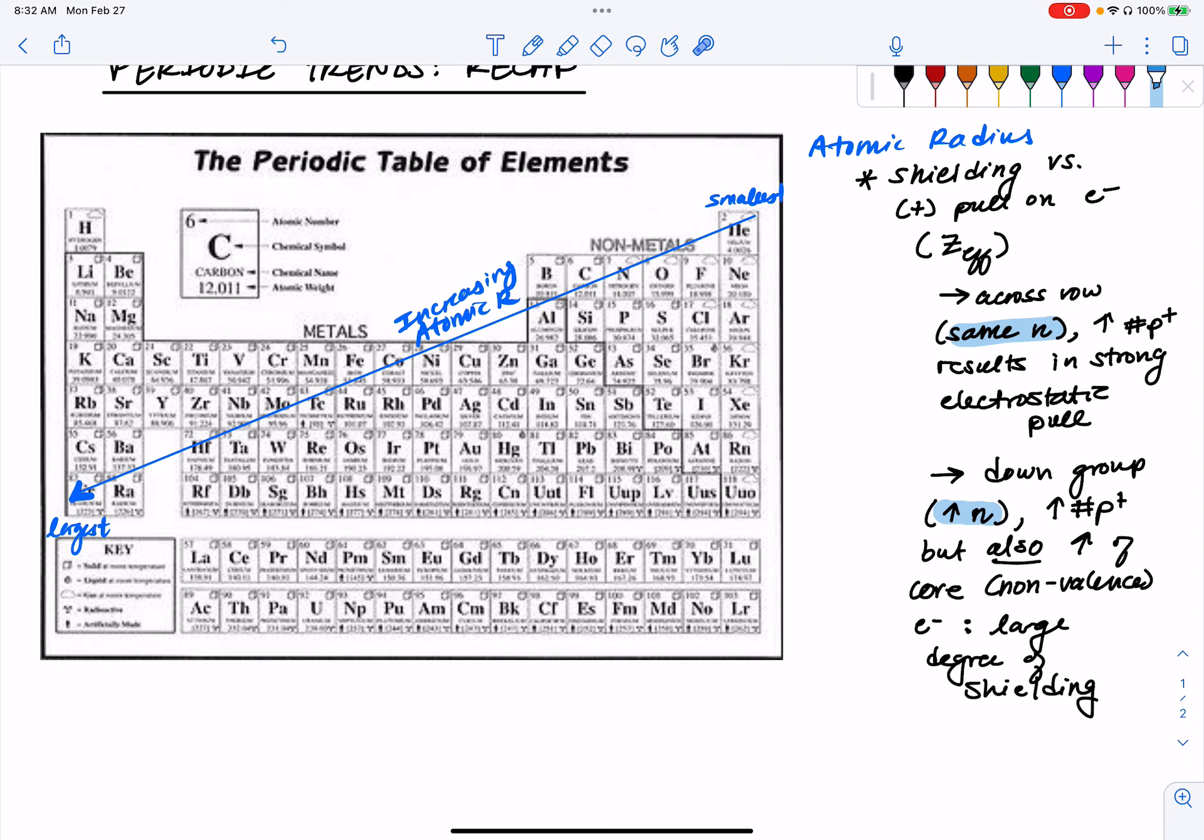And it is from this logic of shielding effective nuclear charge and how well that proton positive pull attracts the valence electron in an atom where all the other explanations of our other periodic trends come from.